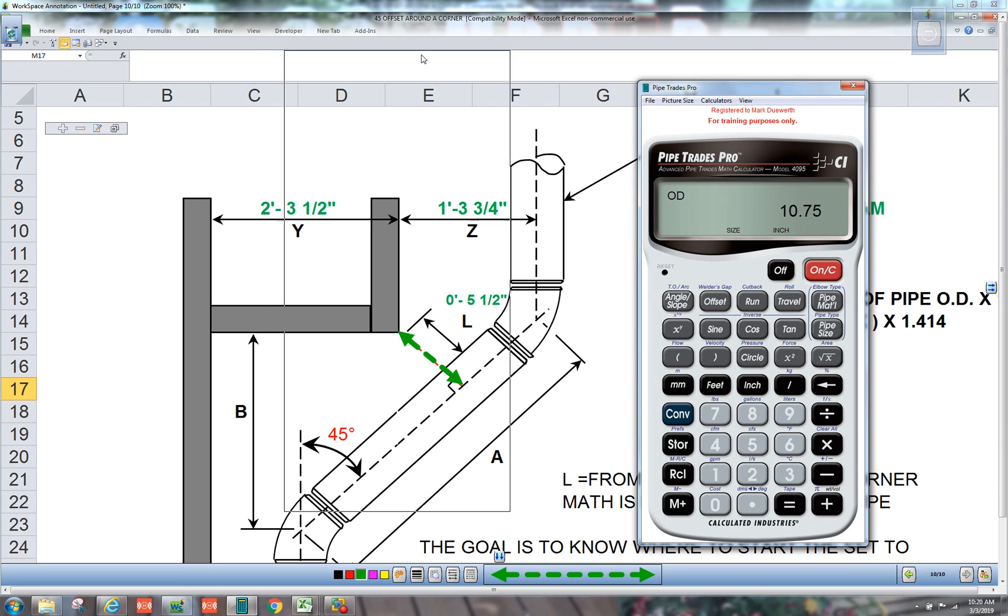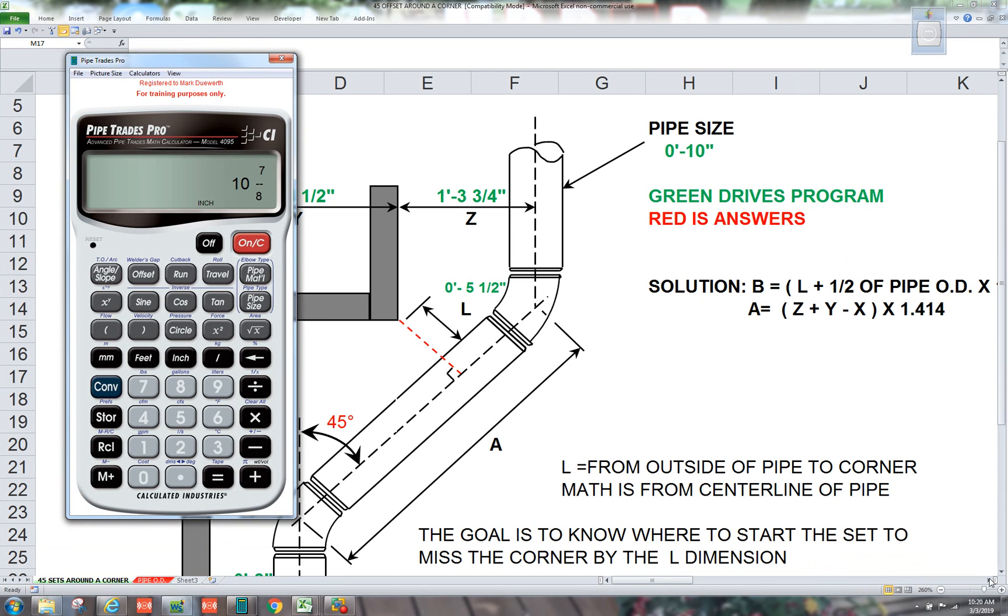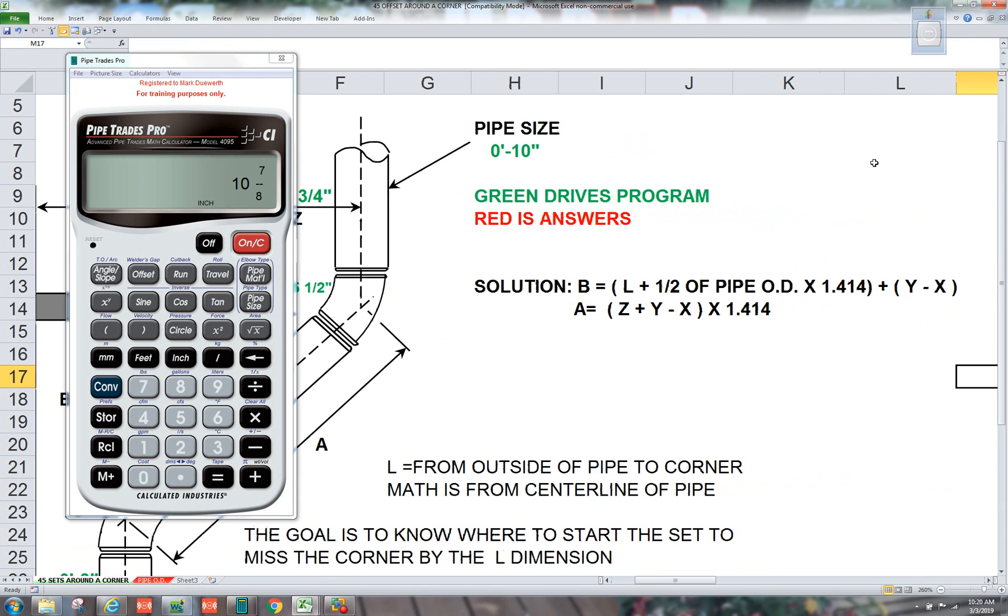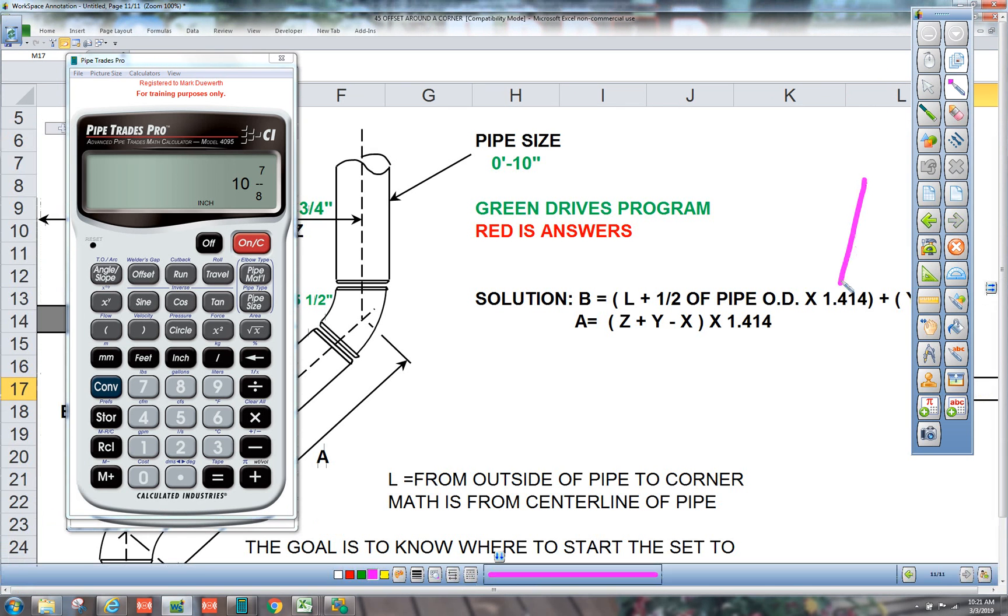So we know 10 inch pipe OD wise is 10 and 3 quarters. So let's take L, add five and a half, five inch one half. Then we have to add half of the pipe. So let's add five inch three eighths. So that's ten and seven eighths. And then at that point there, we're going to multiply it by one point four one four.